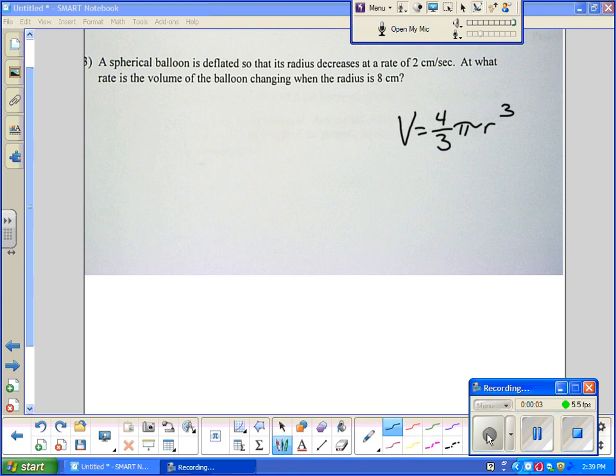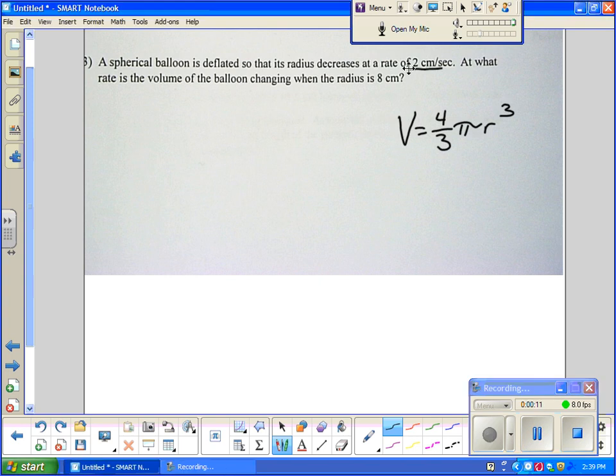Alright, so we have a problem here. A spherical balloon is deflated so its radius is decreasing. It's decreasing at a rate of 2 centimeters per second. There's your tip off that is a related rate. At what rate is the volume of the balloon changing when the radius is 8?